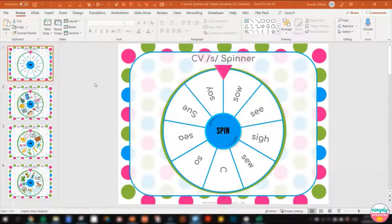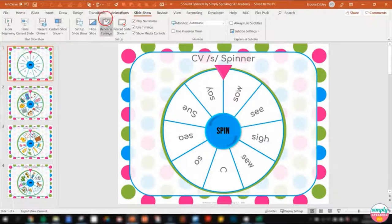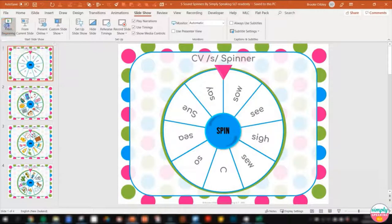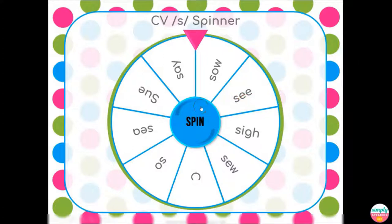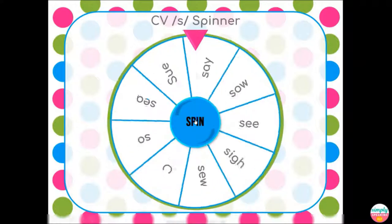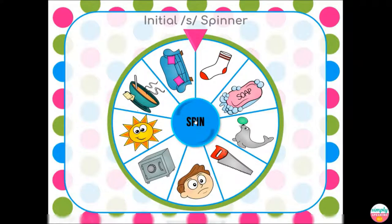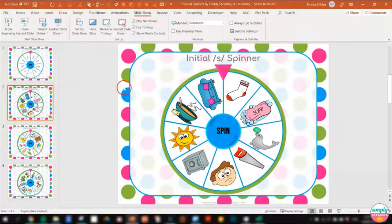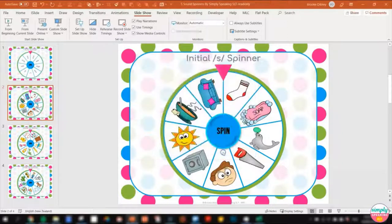Now, what we're going to do is make this open in its own window when you go into show mode to play the game, which means you'll be able to split screen. Go to Slideshow, then Set Up Slideshow, and click where it says 'Browsed by an individual window.' I'm not going to do that for now so I can show you the alternative first. To play the game we go to Slideshow and From Beginning. Now we're using the activity as intended, but it's full screen so we can't split screen. To end a show, right-click and hit End Show, then go back and set up the slideshow as 'Browsed by an individual window' and hit OK.